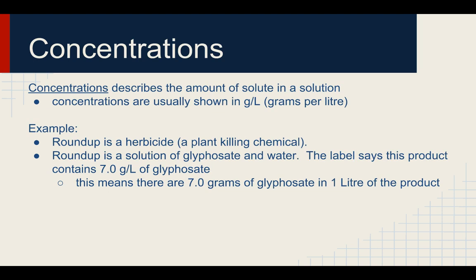Concentrations describe the amount of solute in a solution. Concentrations are usually shown in g per L, or grams per liter. Make sure you're aware of that — it's grams per liter, not kilograms per milliliter. An example of this is Roundup, which is a herbicide, a plant-killing chemical. Roundup is a solution of glyphosate and water. The label says this product contains 7.0 grams per liter of glyphosate, meaning there are 7 grams of glyphosate in 1 liter of the product.